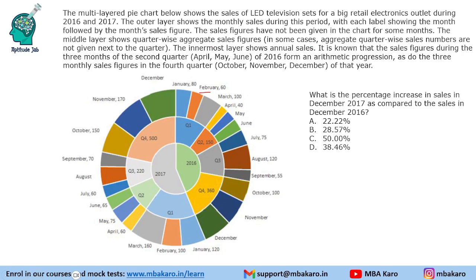In some cases aggregate quarter figures are not given next to the quarter. Quarter-wise this is Q1, Q2, Q3 and so on. For Q4 and Q2 the values are given; Q1 and Q3 the values are not given. Similarly, the innermost layer gives the annual sales.